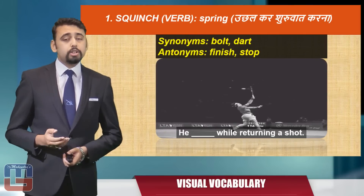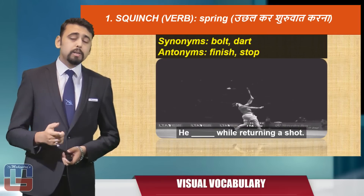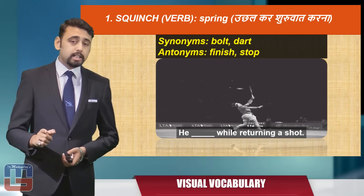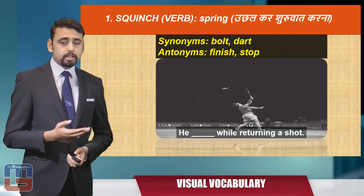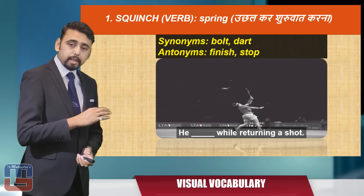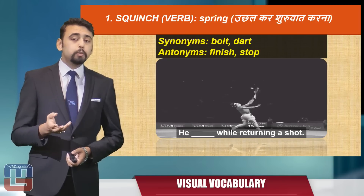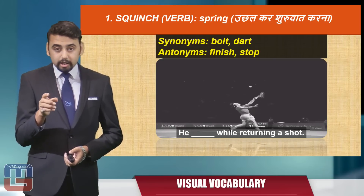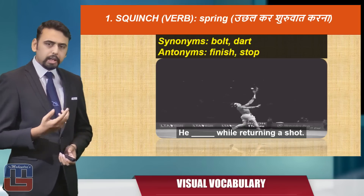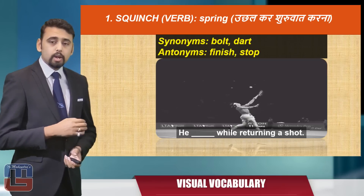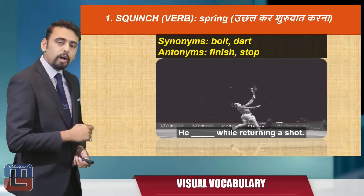Here's the first word of the day: 'squinch.' Squinch is a verb and it means to spring. The synonyms are 'bolt' or 'dart,' and the antonyms are 'finish' or 'stop.' You can see a tennis player giving a return. The sentence: 'He blank space while returning a shot.' The answer is squinch — 'He squinches while returning a shot,' meaning he has a habit of jumping and then hitting it.